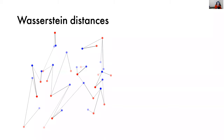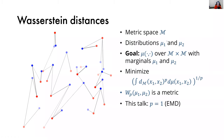Some points are brighter than others, meaning their mass is higher. Now it doesn't make sense to ask for minimum cost matching given that the number of points is different and not all of them are created equal — this is exactly the optimal transport problem. We have some metric space, in this case two-dimensional Euclidean space, and two distributions mu1 and mu2. For this talk, given that we talk about algorithms, let's assume mu1 and mu2 are supported on a finite set of points.